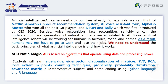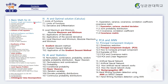AI is based on algorithms that operate using data and processing power. You will learn eigenvalues, eigenvectors, diagonalization of matrices, singular value decomposition, and principal component analysis, local extreme points, counting techniques, probability distribution, covariance matrix, and some coding using Python and R language. These are the contents we're going to cover this semester.